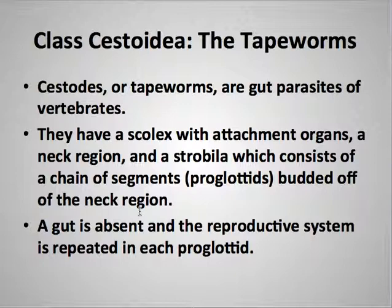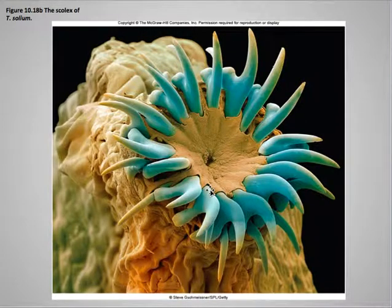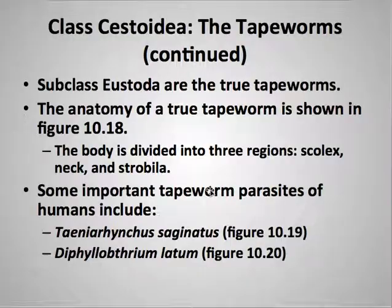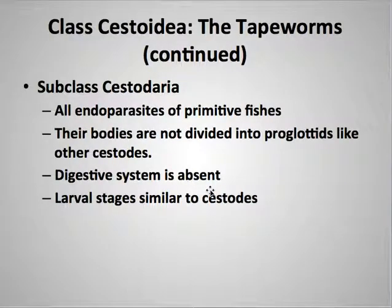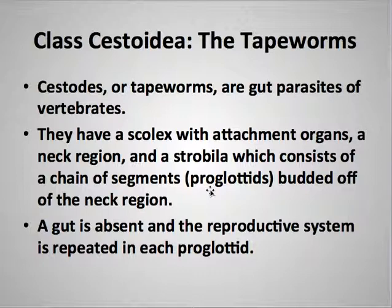Tapeworms, or cestodes, are gut parasites of vertebrates and they can be very large. They have something called a scolex, which is an attachment organ — this is actually the most imposing photo showing a scolex and how they attach to their host within the digestive system as an adult. The other interesting characteristic of tapeworms is that their body region — the strobila — consists of a chain of proglottids. These are repeated segments that bud off of the neck region, and they are reproductive segments. Those break off and that's how they reproduce. The gut is completely absent — they don't need it.